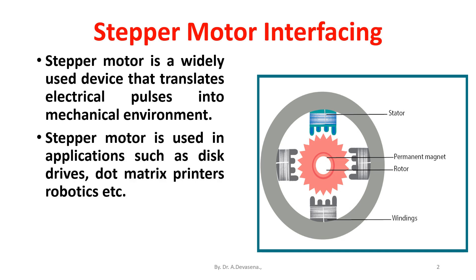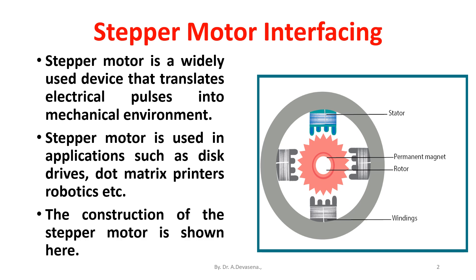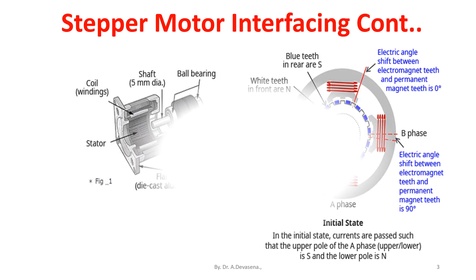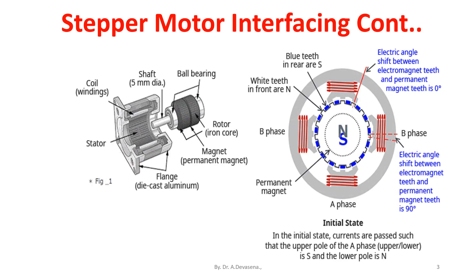The construction of the stepper motor is shown here. In the initial state, currents are passed such that the upper pole of A phase — that is upper/lower is S and the lower pole is N, as represented here.